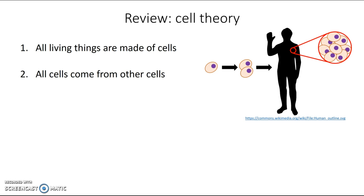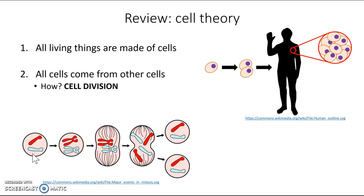How did they do that? Well, this is where cell division comes in. This is how cells come from other cells, and the basic idea behind cell division is that one cell can copy its DNA and then pull apart those copies to produce cells that are more or less similar to the first cell they started with, depending on what kind of division we're looking at.